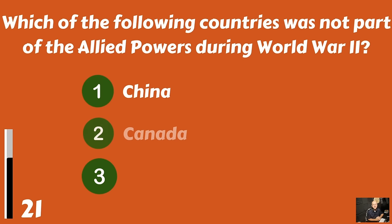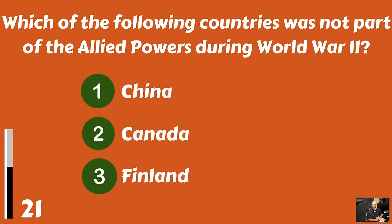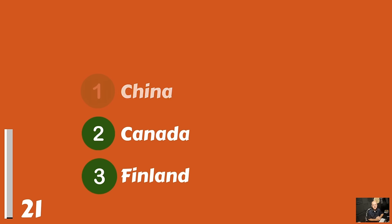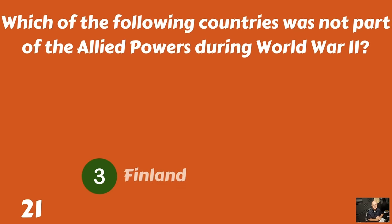Which of the following countries was not part of the Allied powers during World War II? China? Canada? Or Finland? Not part of the Allied powers in World War II — Finland.